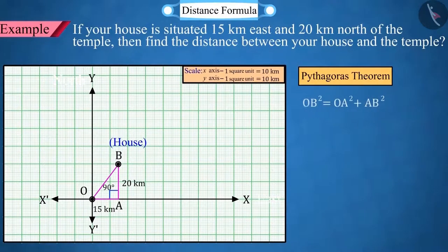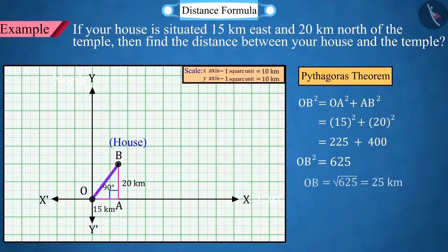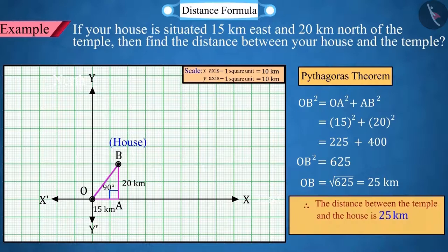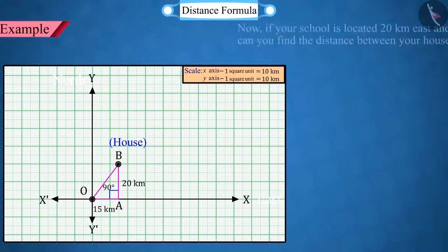Here, by using the Pythagoras theorem in this graph, we obtain the distance between the origin point O to B as 25. So, the distance between the temple and the house will be 25 km.